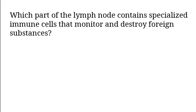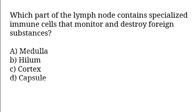Which part of the lymph node contains specialized immune cells that monitor and destroy foreign substances? A) Medulla, B) Hilum, C) Cortex, D) Capsule. The correct answer is option C — Cortex.